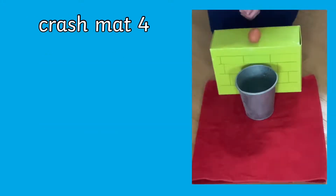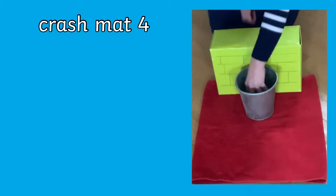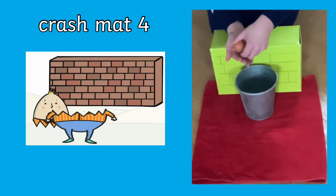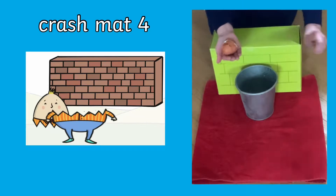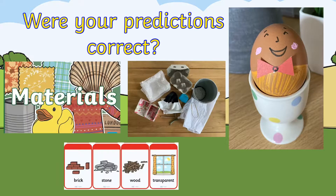Crash mat number four — metal. Will Humpty Dumpty break or not break? I wonder what will happen. Humpty Dumpty... oh no. Humpty Dumpty did indeed break. Well done mini scientists — if your predictions were correct, and if they weren't correct, that's what science is all about: experiments and finding out what does and doesn't work. I hope you enjoyed that experiment everyone. See you next time.